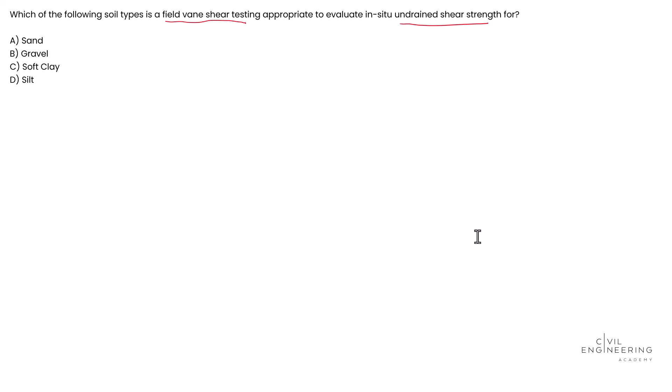So a field vane shear test is specifically designed to measure the in-situ undrained shear strength of soft to medium cohesive soils. So this test is particularly effective in soils where the disturbance during sampling can significantly affect test results.